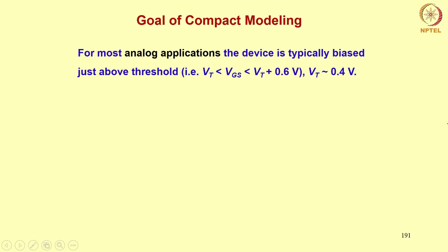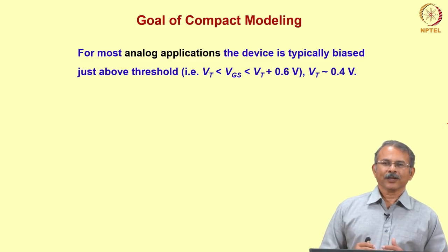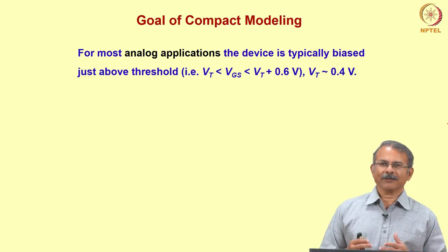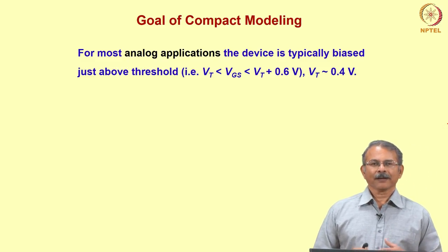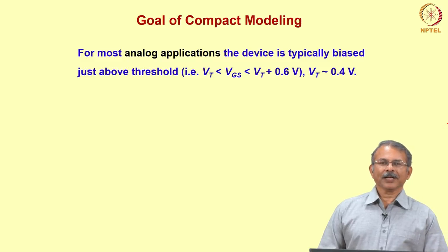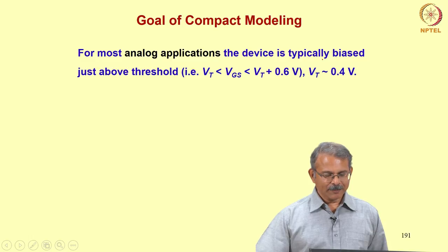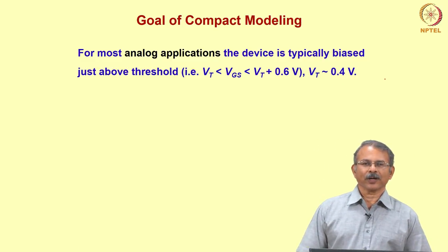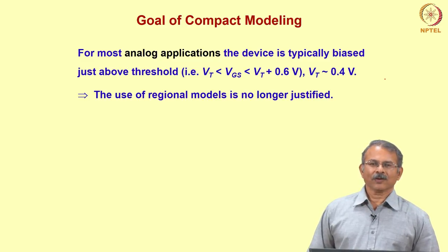This lays the foundation for improving the model, because the threshold based model does not have an expression for the moderate inversion region. What do we want in practice when simulating a circuit? A model suitable for circuit simulation is called a compact model. For most analog applications the device is typically biased just above threshold, that is for Vgs greater than Vt and less than Vt plus 0.6 volts, where Vt is approximately 0.4 volts. Hence the use of regional models is no longer justified.